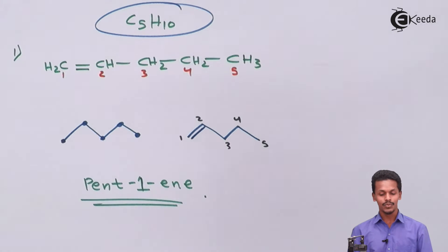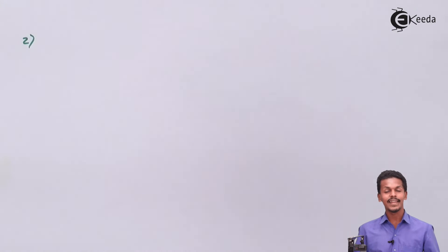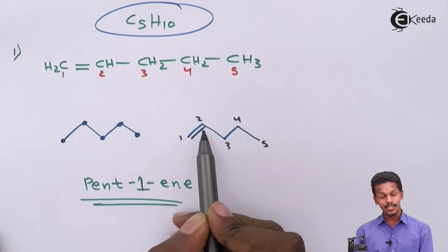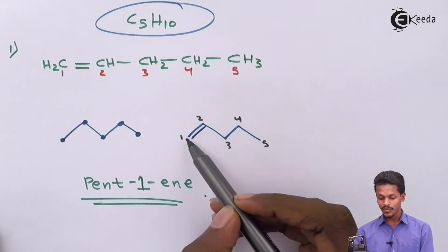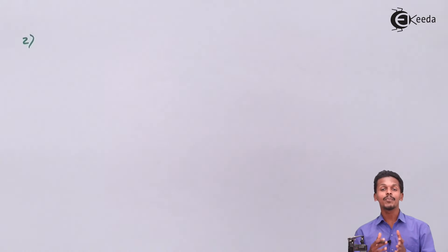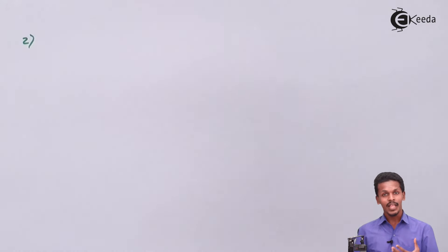The next isomer is a position isomer. In the first isomer, the double bond was between carbon number one and carbon number two. In this second isomer, the double bond is between carbon number two and carbon number three, while carbon number one and carbon number two have only a single bond. This is another valid possibility for C5H10.